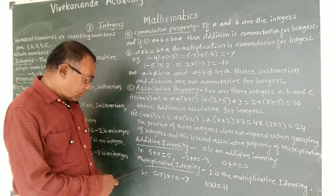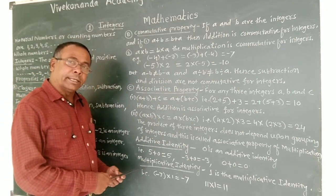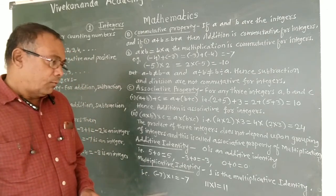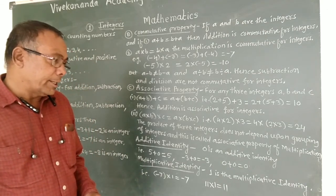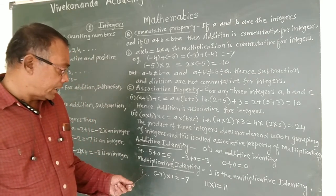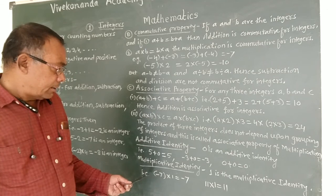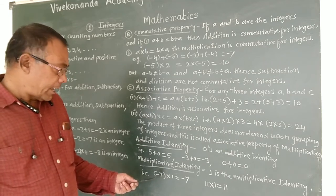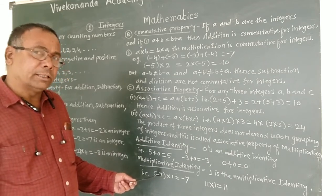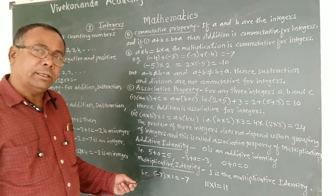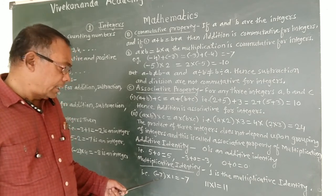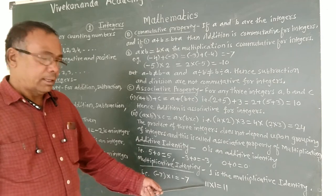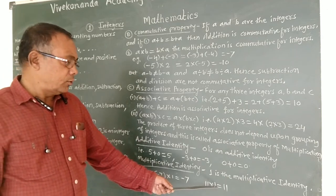Now we will see the multiplicative identity. One is the multiplicative identity, meaning if we multiply any number by 1, its value does not change. For example, minus 7 into 1 equals minus 7, and 1 into 1 equals 1.